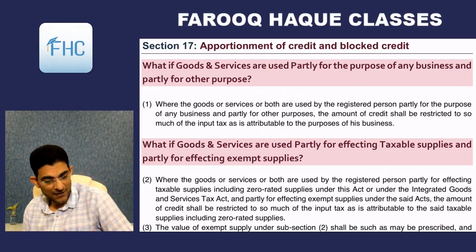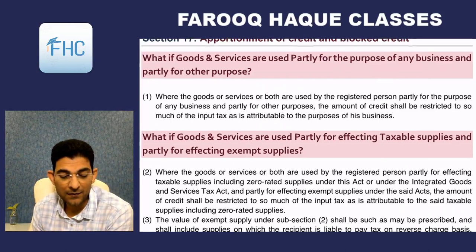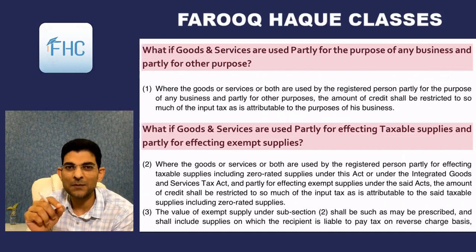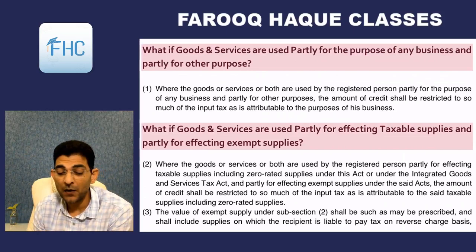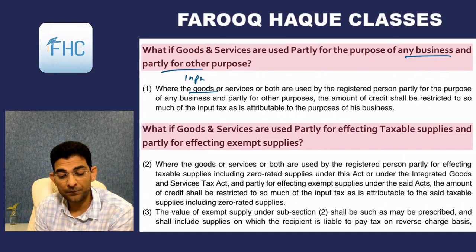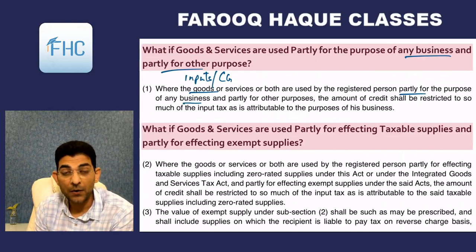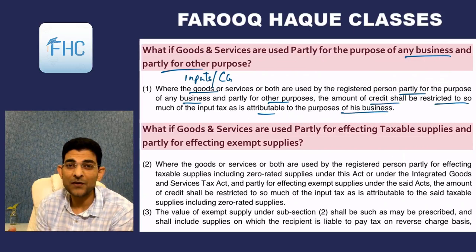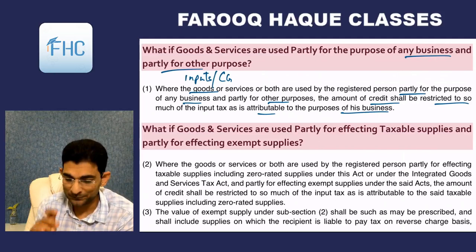Section 17 subsection 1 covers goods used partly for business and partly for other purposes. Where goods — including inputs and capital goods — or services or both are used by the registered person partly for the purpose of business and partly for other purposes, the amount of credit shall be restricted to so much of the input tax as is attributable to the purpose of his business. This is self-explanatory.